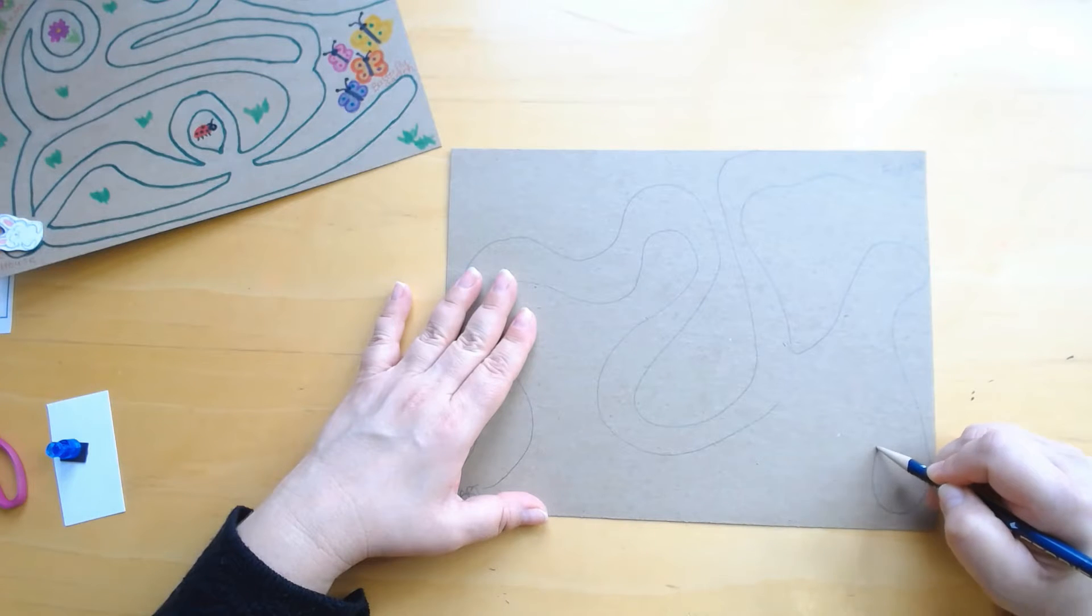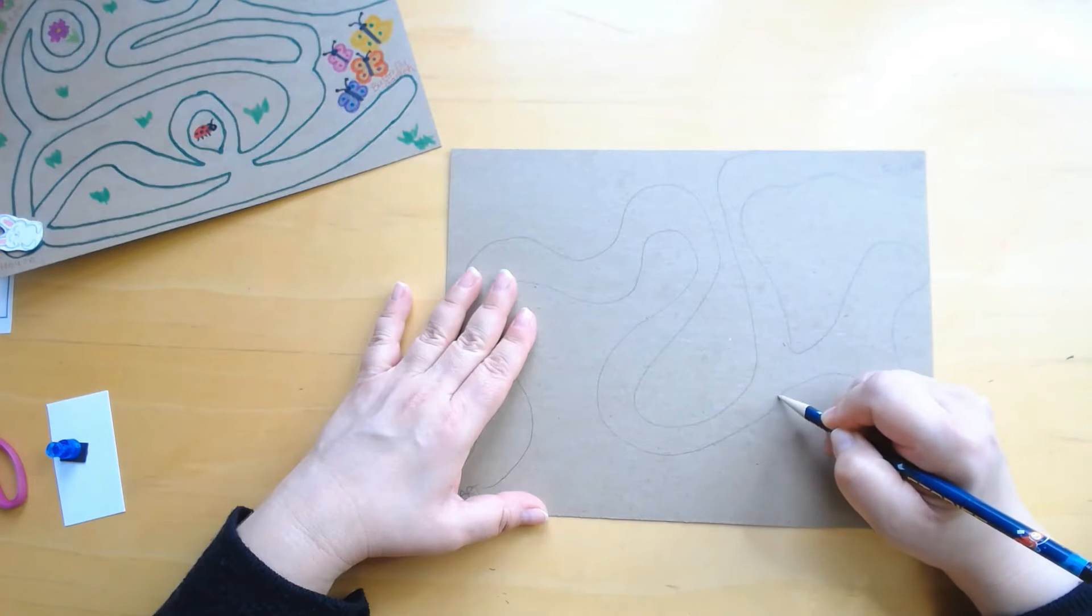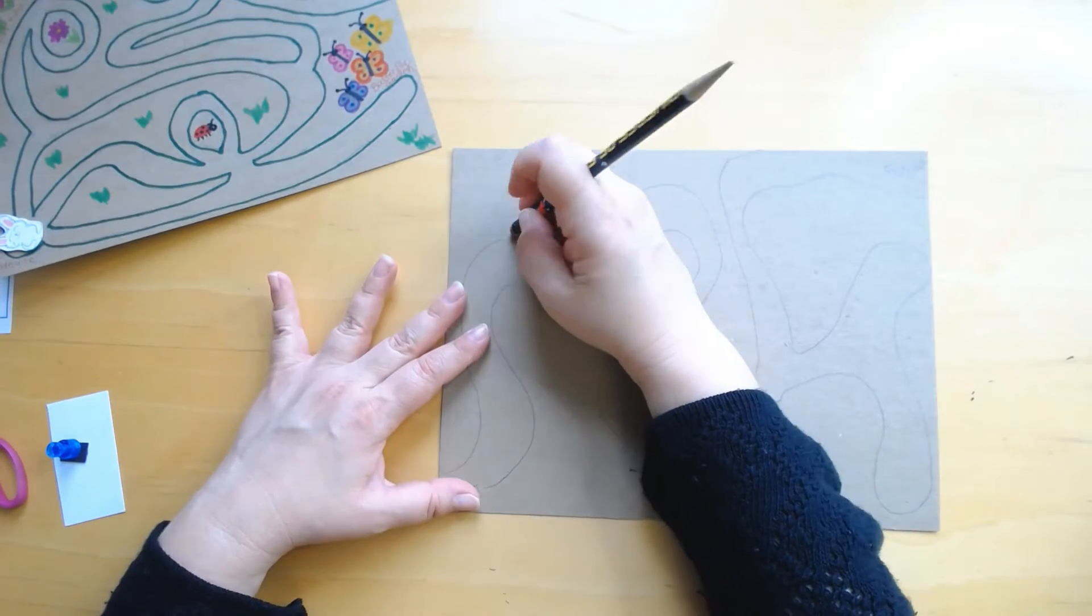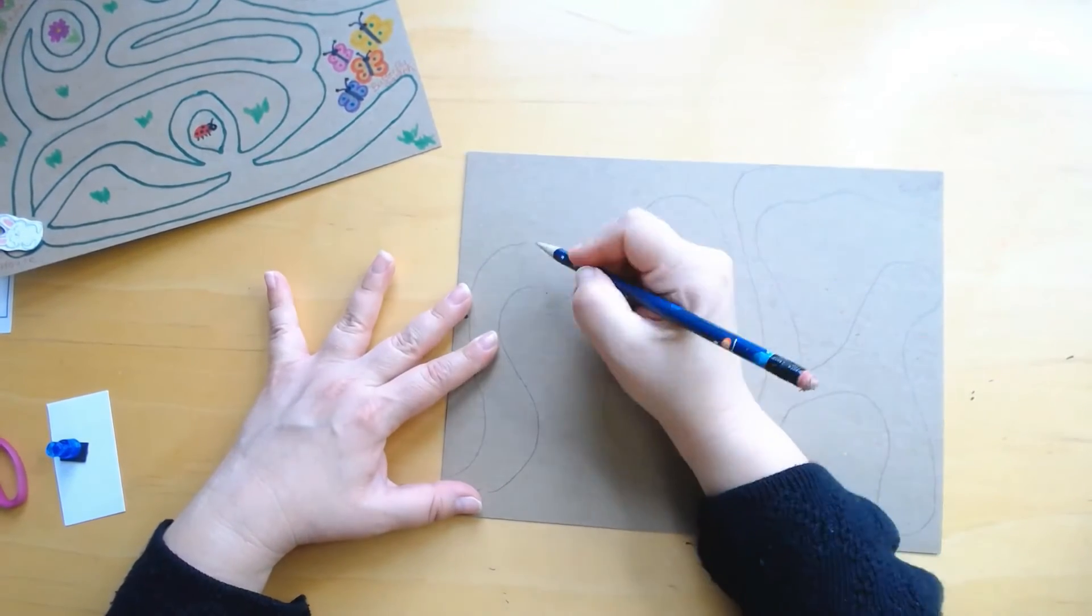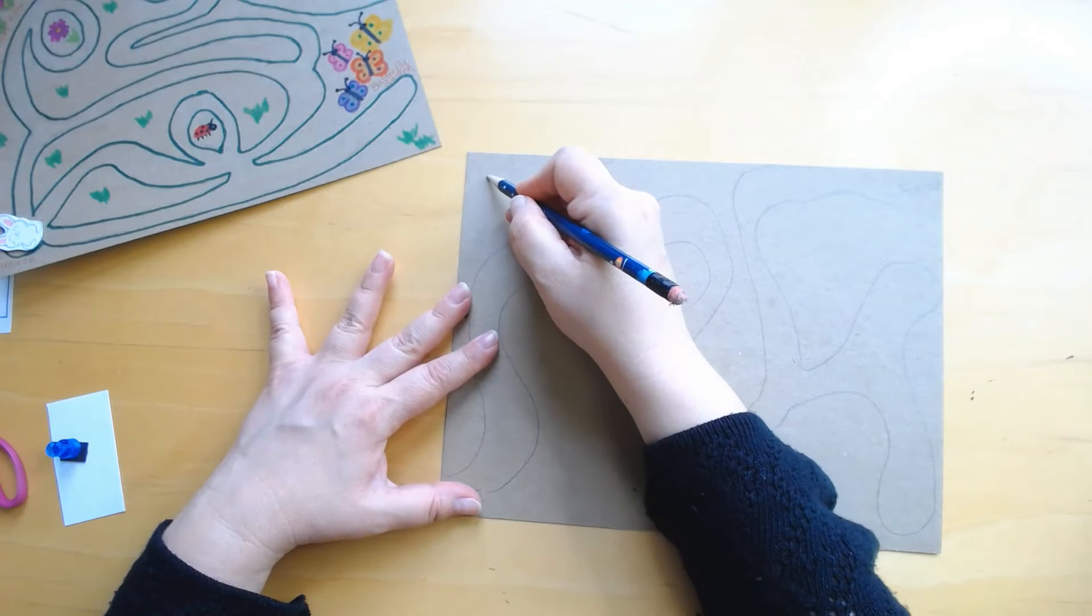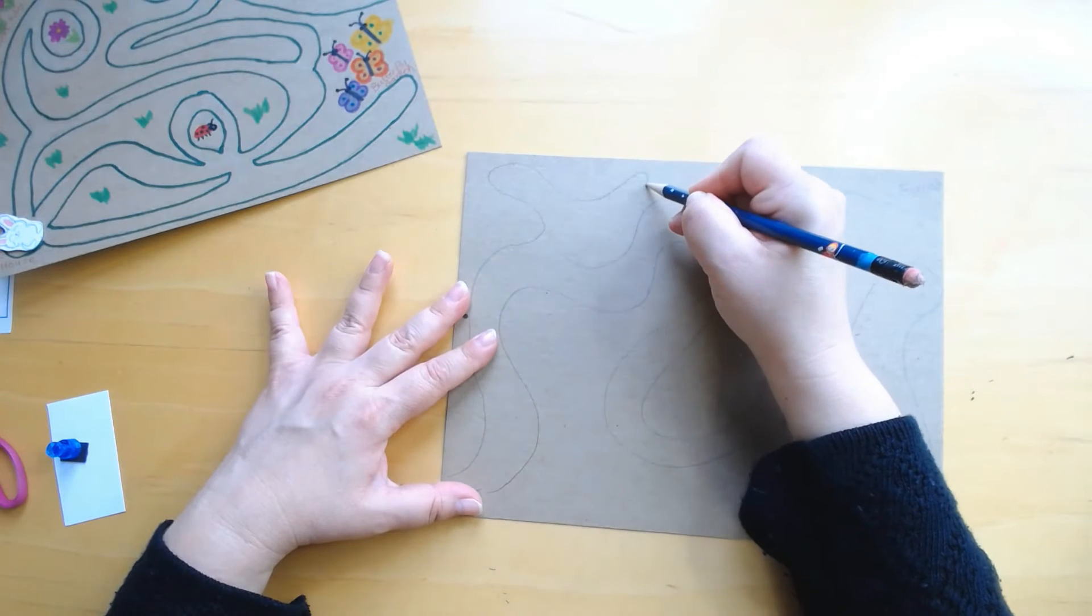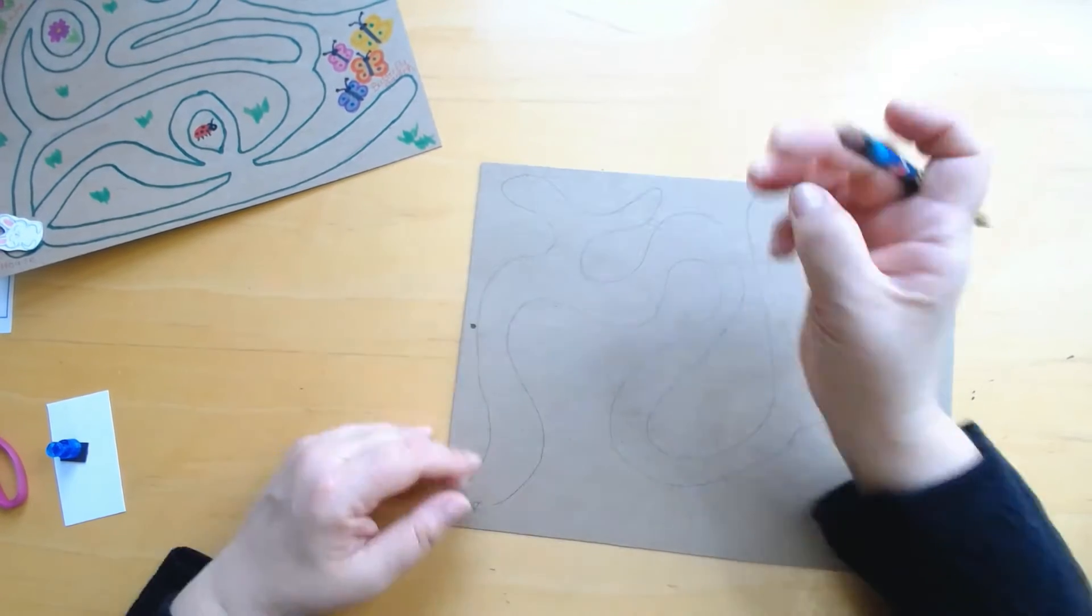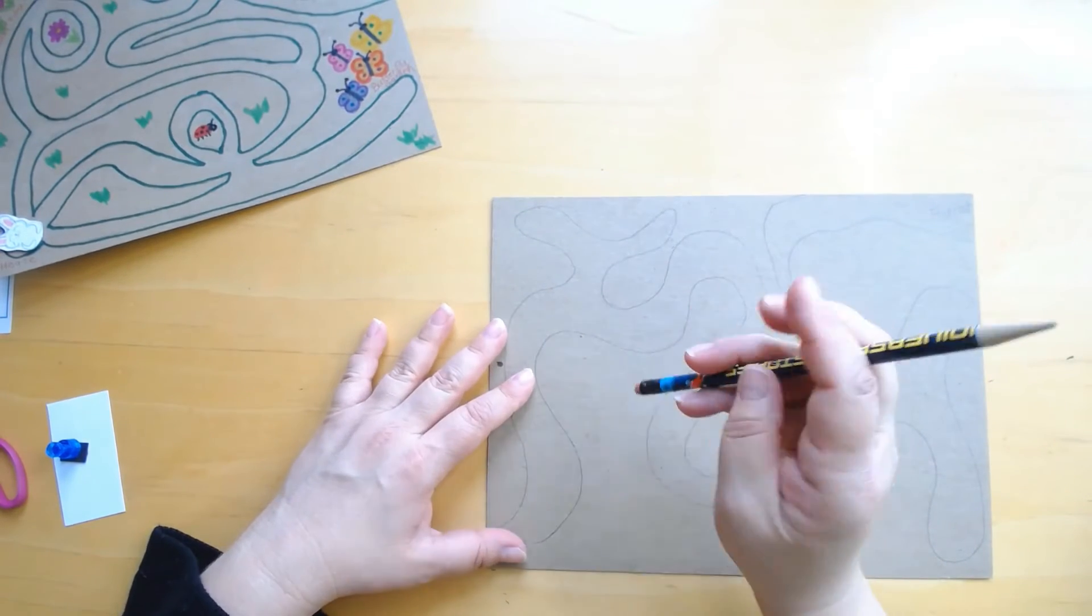You could erase in other places and make some detours or something. See that doesn't go anywhere. Maybe you can do that over here as well. Just erase and however you think you want to design your maze, you can totally do that.